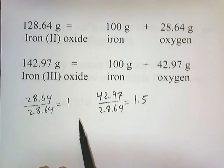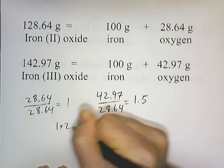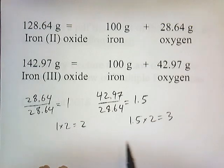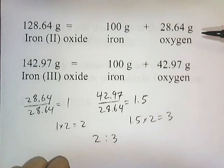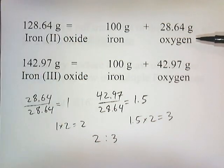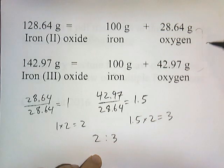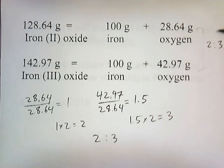1 times 2 is 2, and 1.5 times 2 is 3. So we find that the whole number ratio is 2 to 3. This means that if we keep the amount of iron fixed, there will be 2 masses of oxygen in iron(II) oxide for every 3 masses of oxygen in iron(III) oxide. The ratios here are 2 to 3 — small whole number ratios. That's what the Law of Multiple Proportions means: you keep one quantity fixed, compare the ratios of the other quantities, and find that you can express them in small whole number ratios.